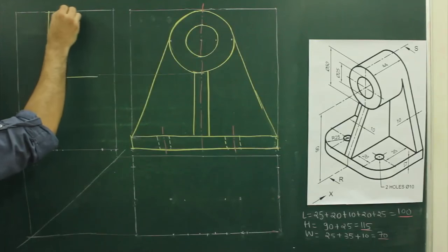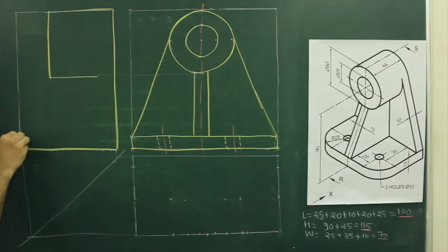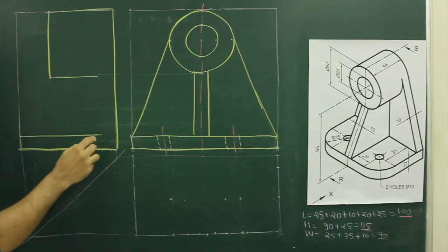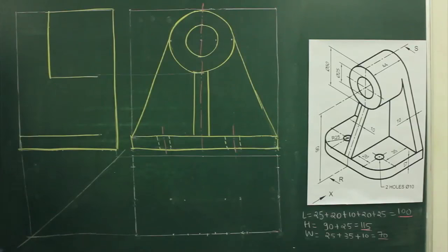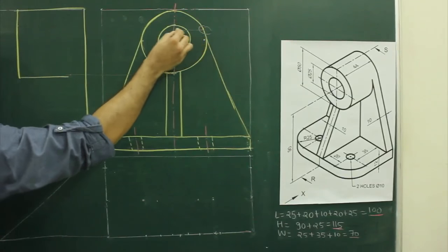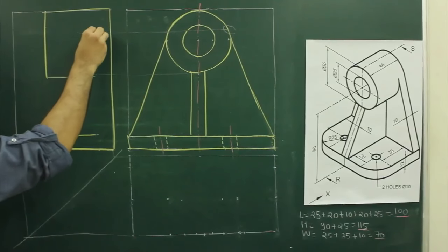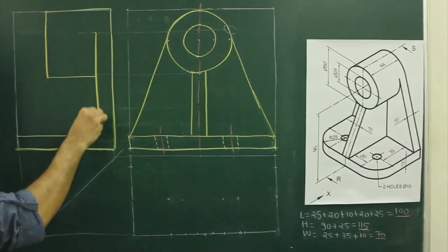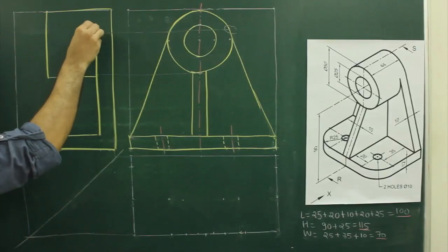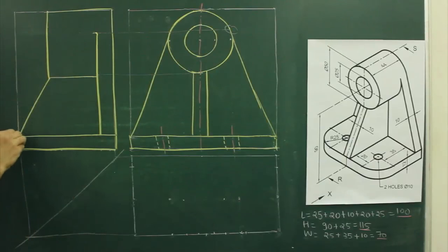Then we can draw this rectangle. Take this down — this height is 12. If you see the rib part, we can project from 24. That width we know is 10, so we can take from here. This will be done — this is the inclined portion of the rib.